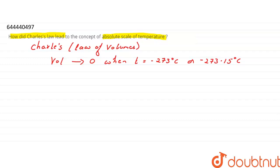Let us apply Charles Law and see how volume approaches zero and how the concept of absolute scale of temperature was introduced. According to Charles Law, V is equal to V-naught into (273 plus t) divided by 273.